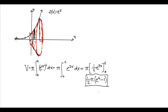If we were to use a calculator, we can find out what this approximately equals: 0.5 times π times e to the 4th minus 1, and we get 84.1918. And it's actually quite large.